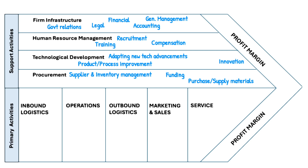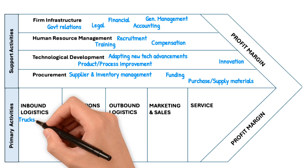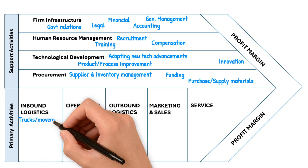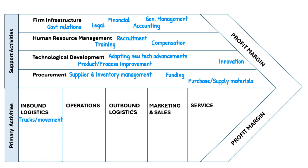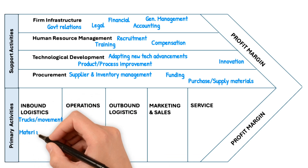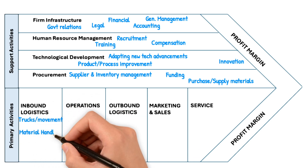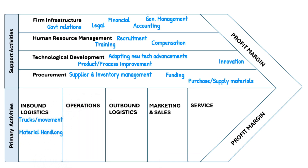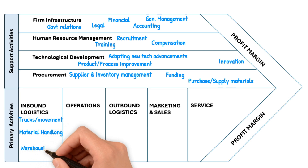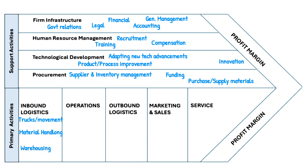That was all about the support activities. Now let's move to the primary activities. The first one is inbound logistics. As the name suggests, inbound means coming inside the business. This includes material handling, warehousing — storing something — and managing the movement of trucks and logistics into the business.